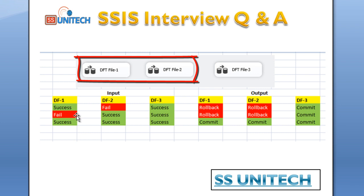In the second scenario, if data flow task one fails and data flow task two succeeds, both will be rolled back because first is rolled back. If both succeed, both will be committed. If either one fails, the other should also be rolled back.